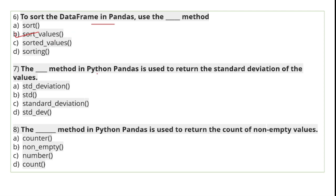The method in Python pandas used to return the standard deviation of the values — which is the square root of the variance — is the std function.